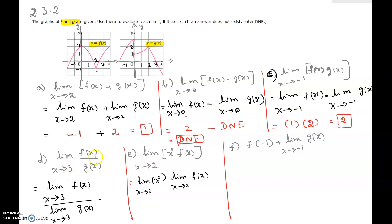Part d: limit as x approaching 3 of f(x) over g(x). By the property of limits, it's the limit of the numerator over the limit of the denominator. Looking at the first graph in the neighborhood of 3, f(x) is approaching 1. The limit as x approaching 3 of g(x) is 0. So 1 over 0 is undefined — the limit does not exist.